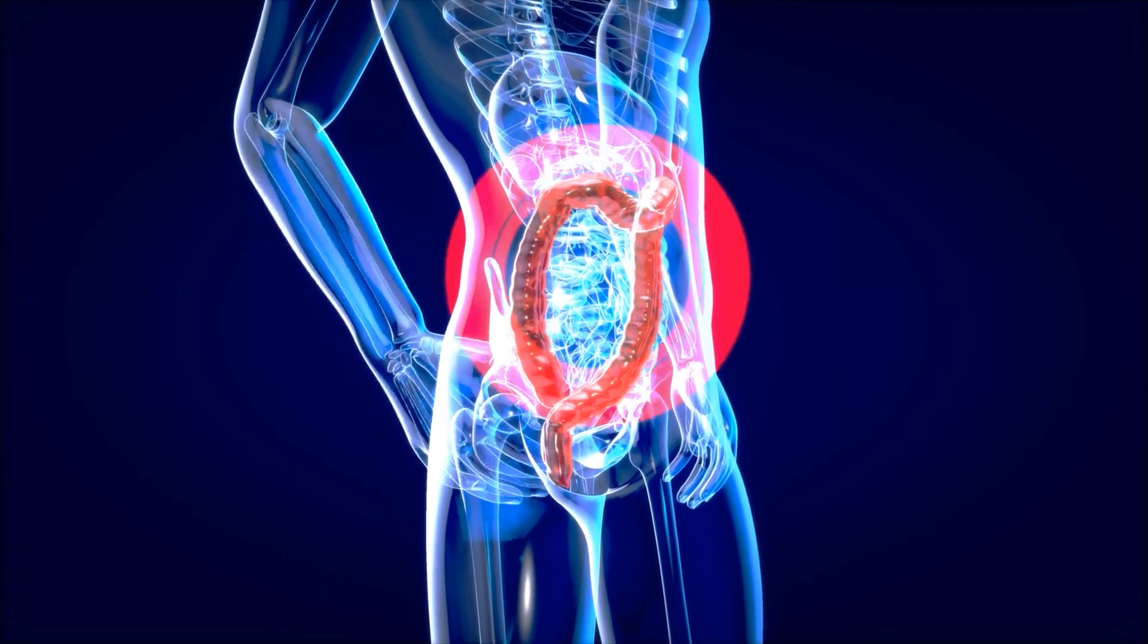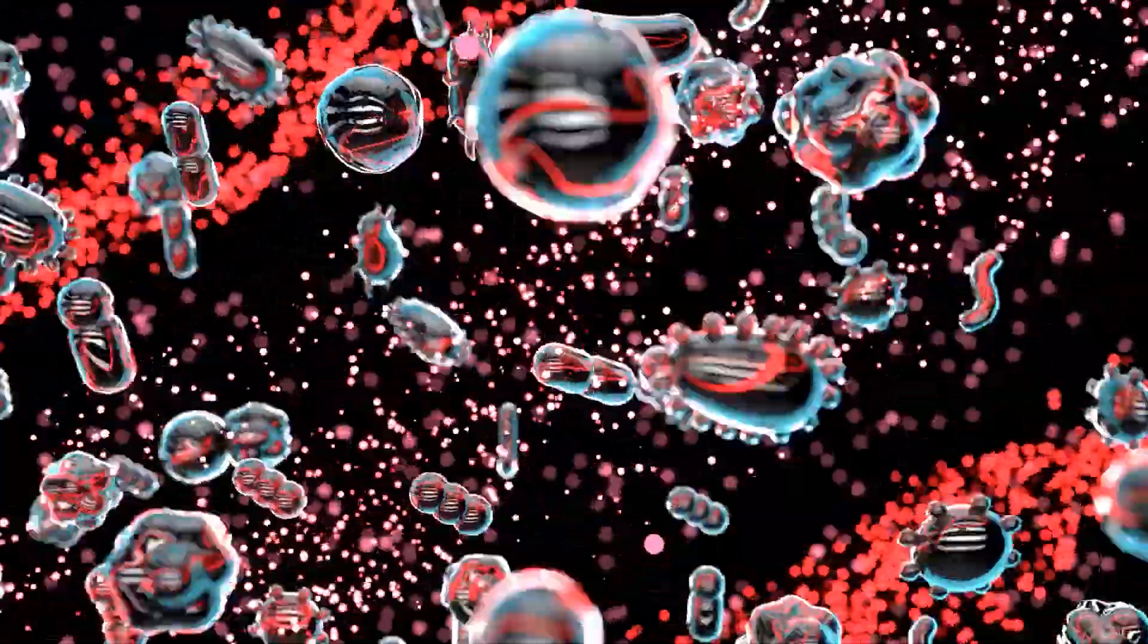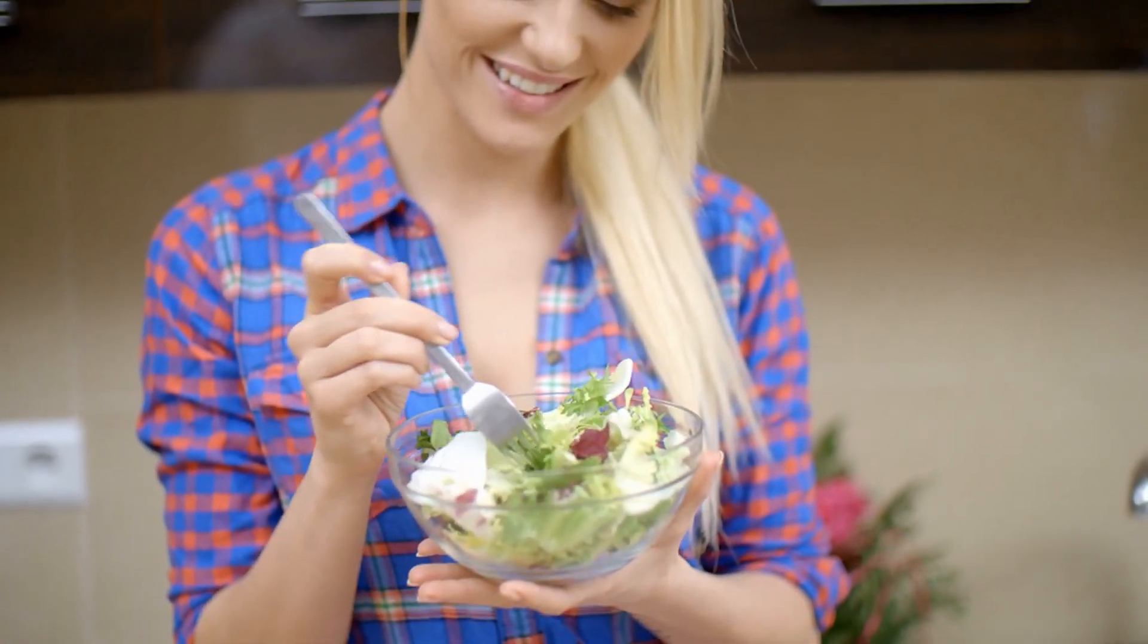When we consume food, our gut bacteria break down complex carbohydrates and fibers into short-chain fatty acids. These fatty acids can be absorbed by our body and stored as fat if not utilized for energy.